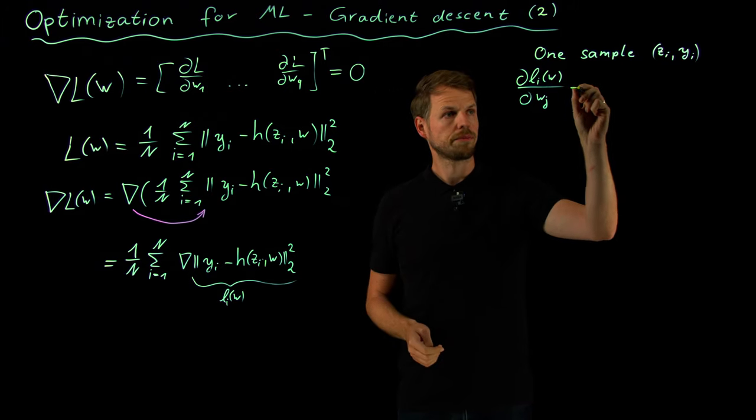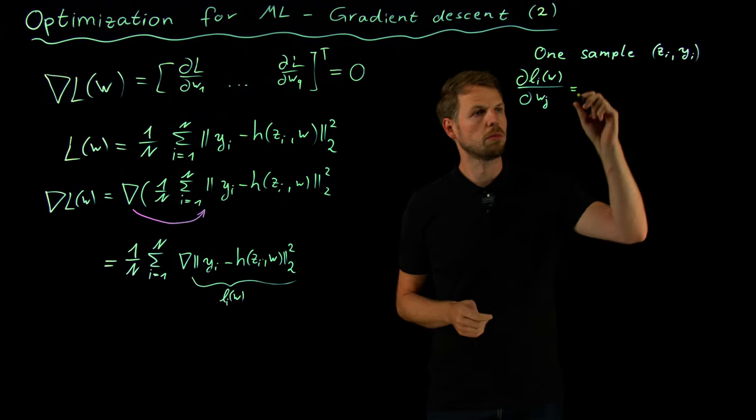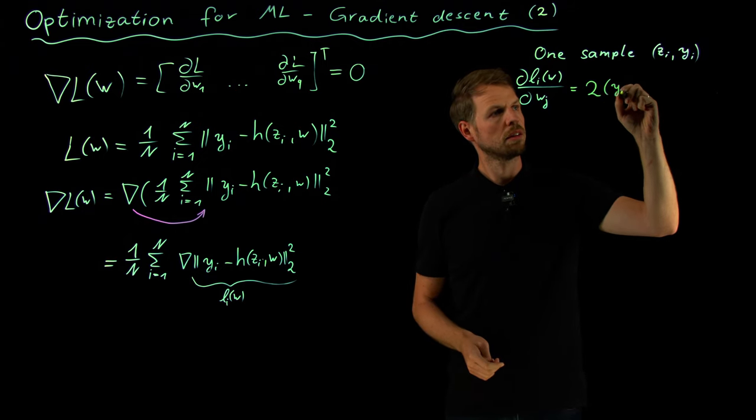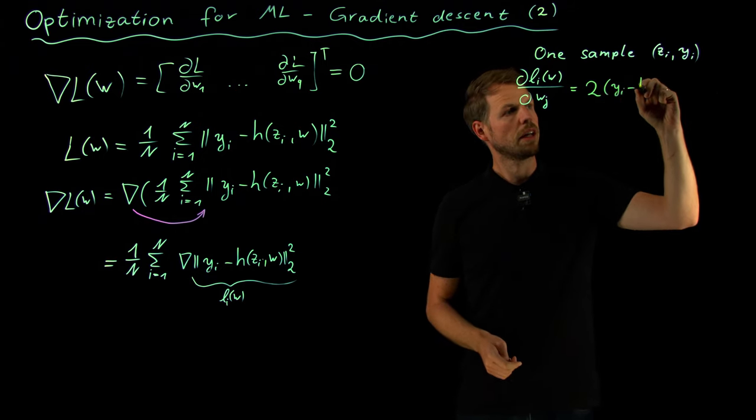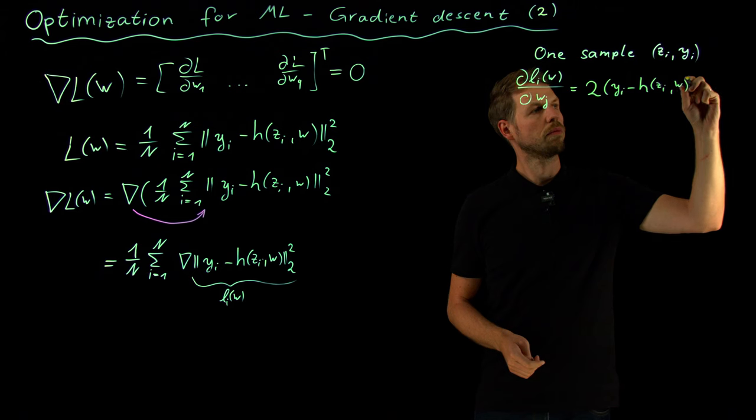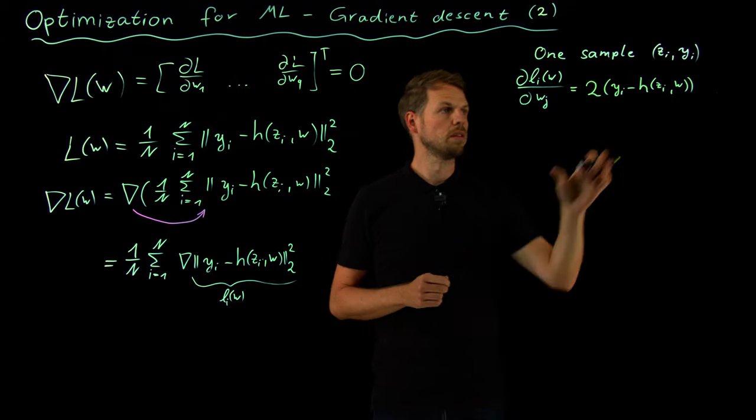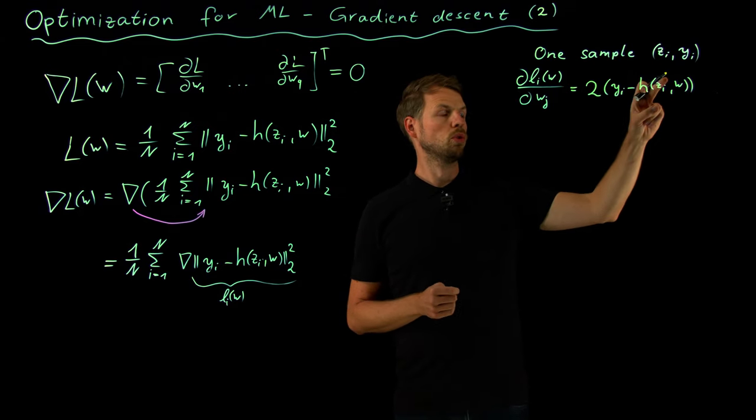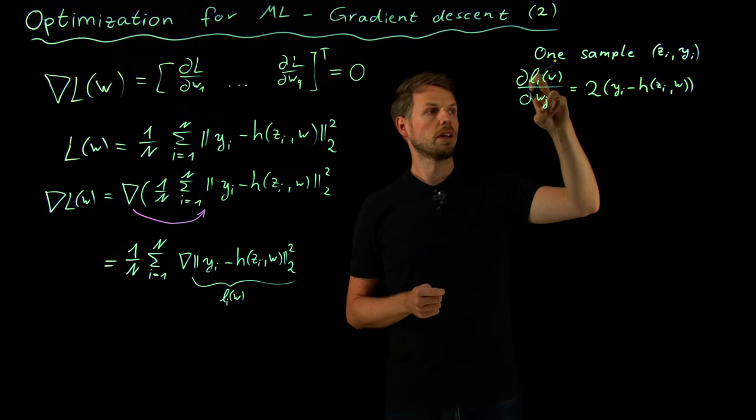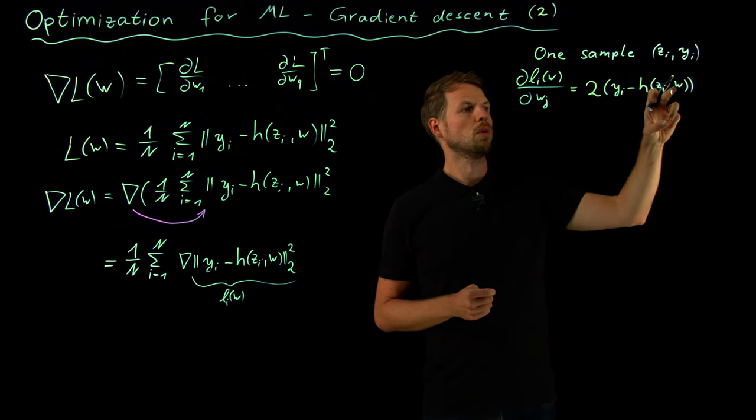What I get is: I am taking the derivative of this bracket expression first, which gives me two times the bracket, y_i minus h of z_i, w. That's where the square goes before. And now as you know we need to take the chain rule. This is the derivative of the loss function with respect to h, and then we need to take the inner derivative, the derivative of h with respect to w.